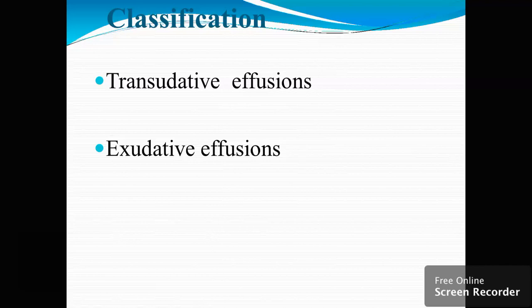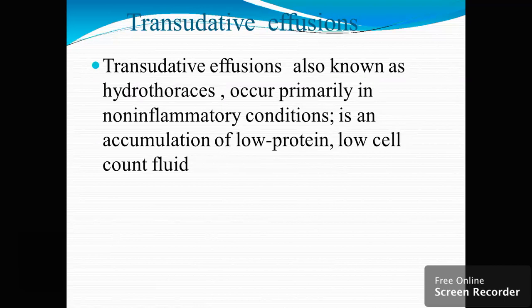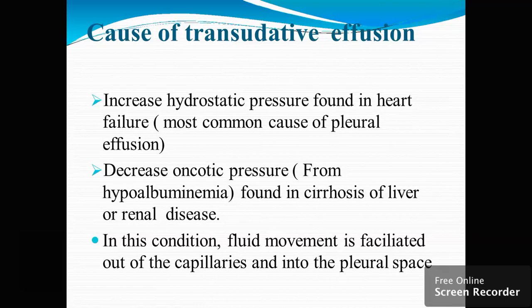The classification has two types: transudative effusion and exudative effusion. Transudative effusion is also known as hydrothorax. It is a non-inflammatory condition in which there is an accumulation of low protein or low cell count fluid in the pleural space. The causes of transudative effusion include increased hydrostatic pressure, which is found in heart failure — meaning when there is heart failure, there will be an increase in hydrostatic pressure.